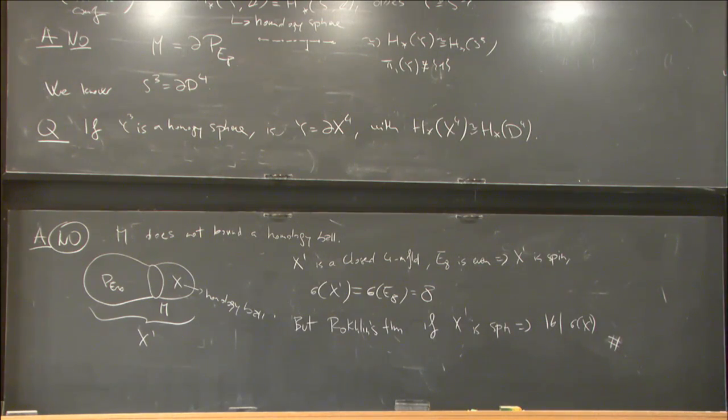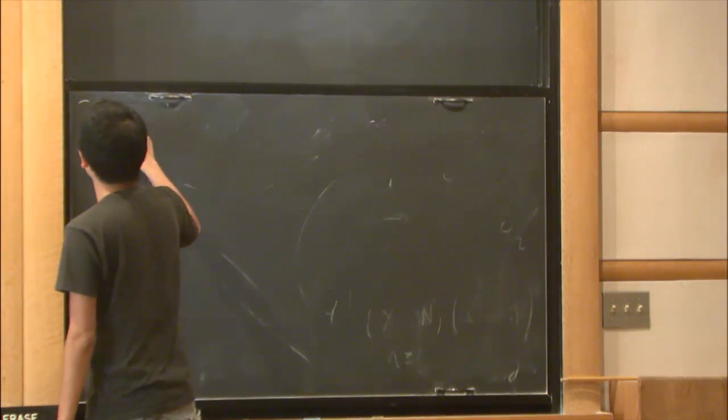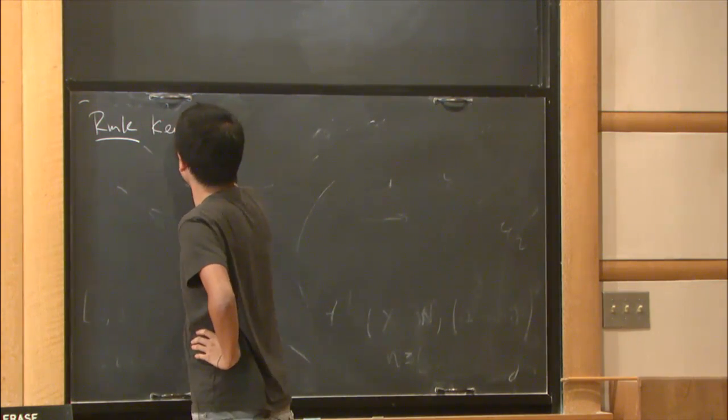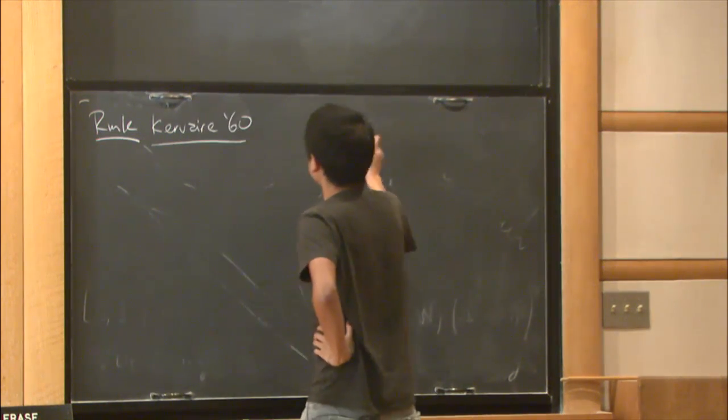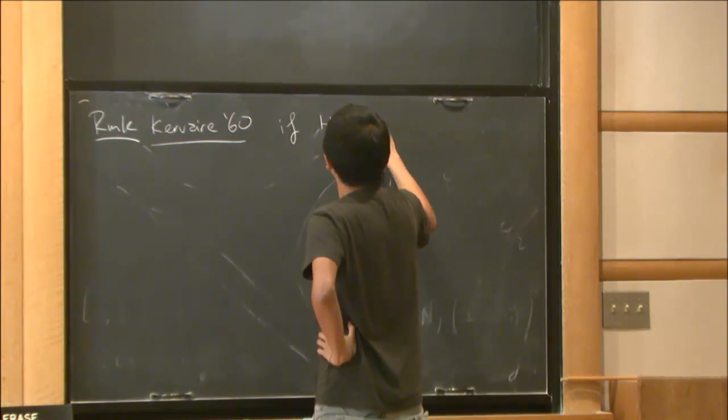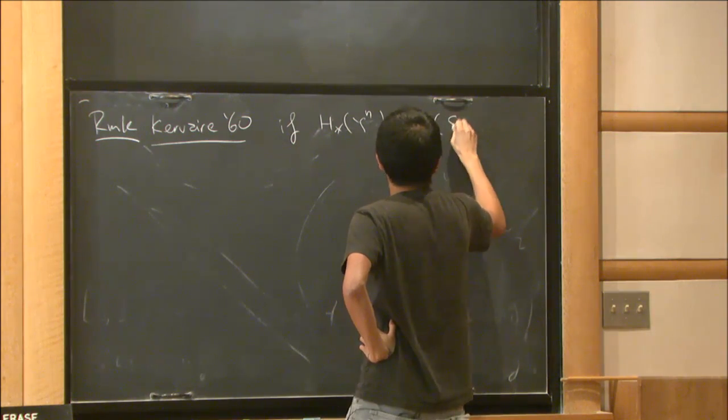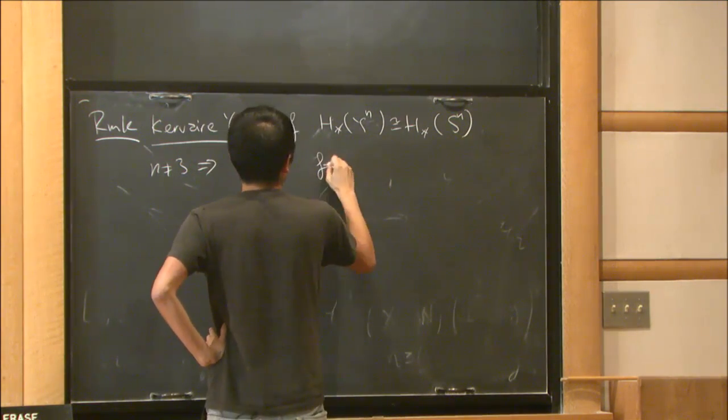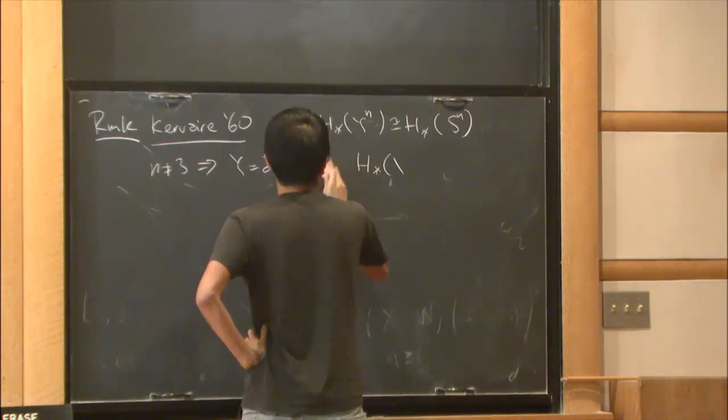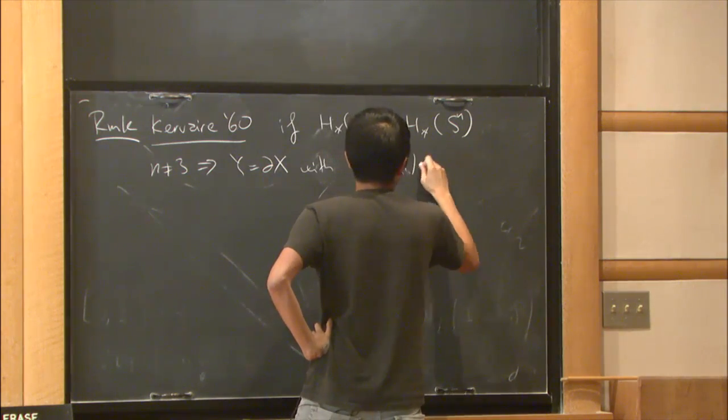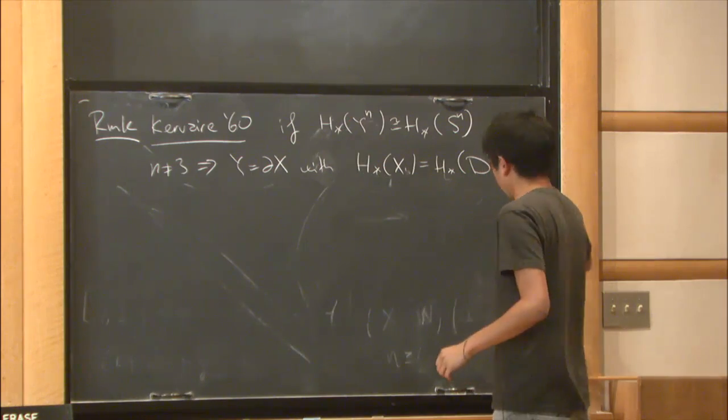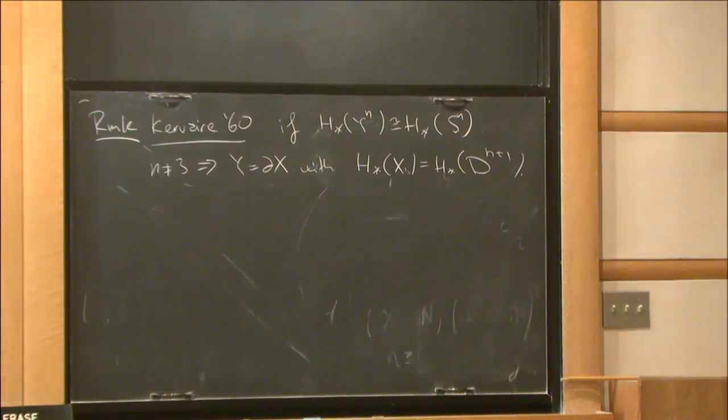Just as a remark, this is one of the things that only happens in dimension 3+1. There's this theorem by Kervaire around the 60s showing that if H* of Yⁿ is the same as H* of the n-dimensional sphere and n is different than 3, then Y is the boundary of a homology ball.